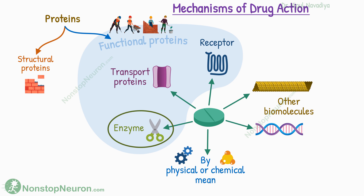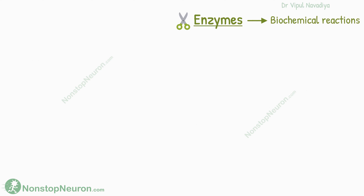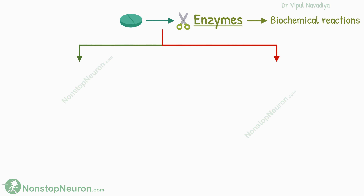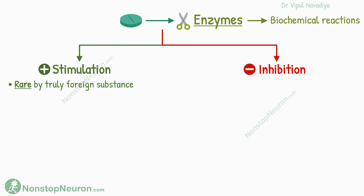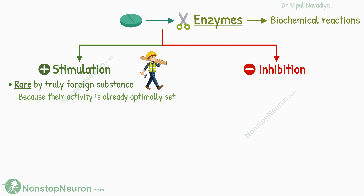We will start with enzymes. Almost all biochemical reactions in our body are catalyzed by enzymes, and by modulating their activity, the rate of biochemical reactions can be modulated. So enzymes are very important drug targets. Technically, a drug can either stimulate or inhibit an enzyme. But stimulation of an enzyme by a truly foreign substance is rare, because the activity of most enzymes is already optimally set — the enzymes are active by default. So there is no scope for stimulation, and it's inhibition that drugs mostly do.